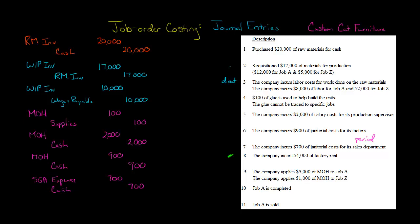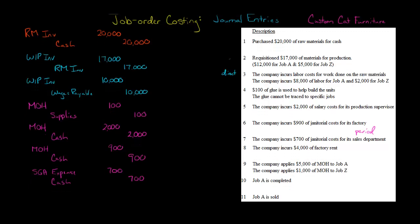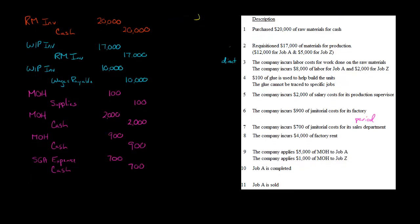Transaction eight: we have some factory rent. Because it's related to the factory, that is manufacturing overhead. We debit manufacturing overhead and credit cash — assuming we pay cash — for $4,000.